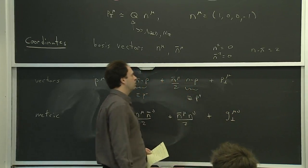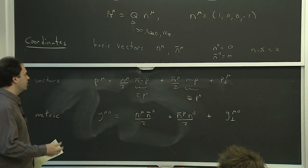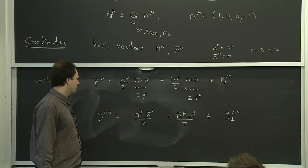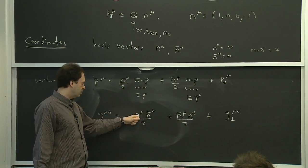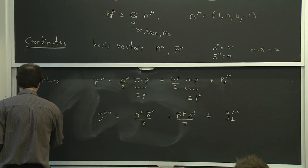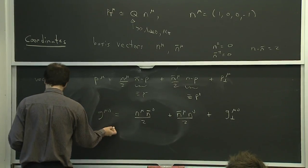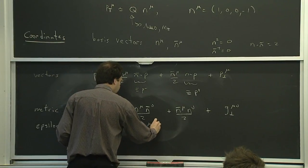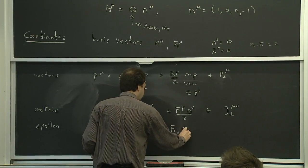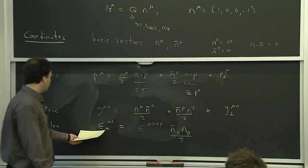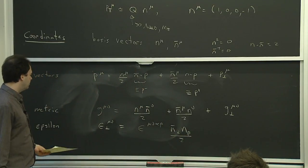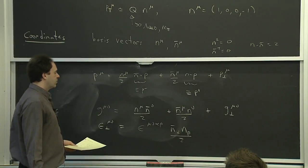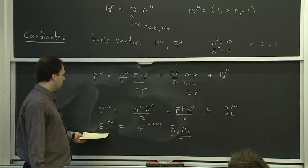We can also write the metric out in these coordinates, which makes explicit the off-diagonal nature of the basis — you have n_mu with n-bar_mu. Unlike Cartesian coordinates, where the component along a direction is given by dotting that vector into the vector you start with, here the component along n is given by dotting n-bar into the vector. You can do this with any tensor; you can define an epsilon-perp tensor, and g-perp_mu-nu is effectively a metric tensor living in the perpendicular subspace.